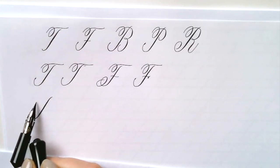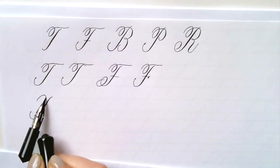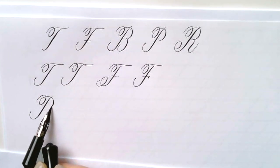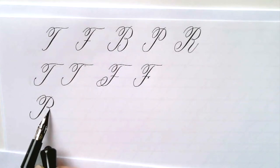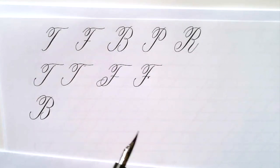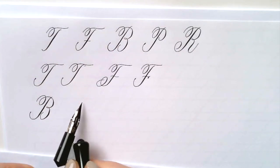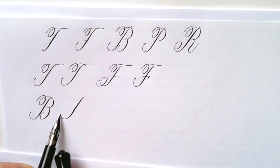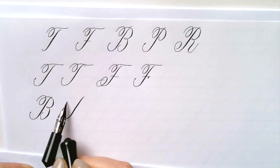For the B, we have the dynamic stem and now it gets interesting. We have the spiral and we want to bring it around in the oval form and then have the second bowl also. So with the B, you want to make sure that the top bowl is smaller than the lower bowl.